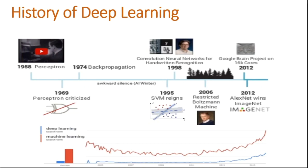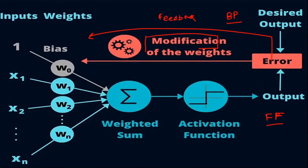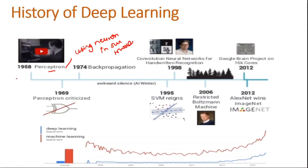I know no one likes history because it's a boring subject, but I'll give you an overview. Perceptron is not a new thing — it's like using a single neuron in our model. Perceptron was invented in the 1950s, and since then we've been working on it with lots of modifications. But in 1969 it got criticized because we didn't have enough computational resources, so progress got delayed.